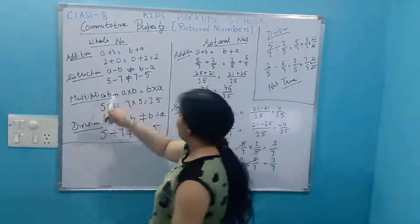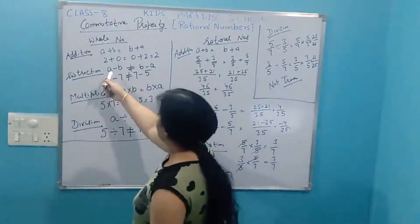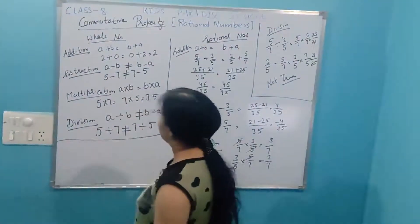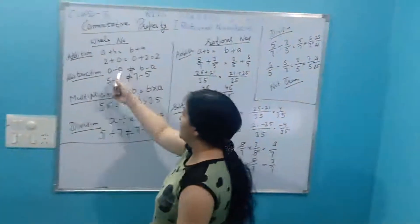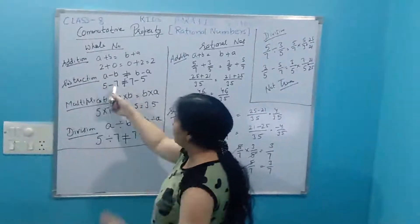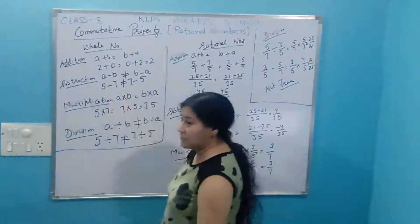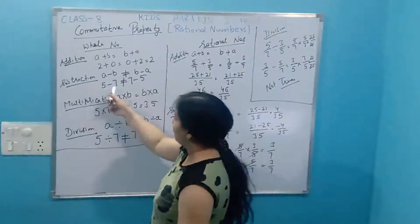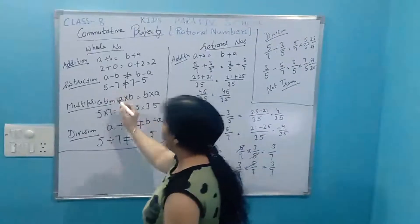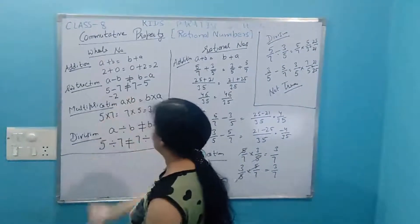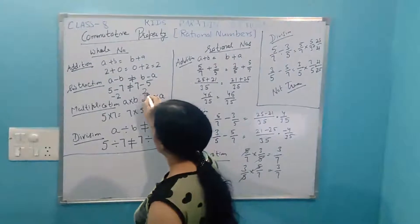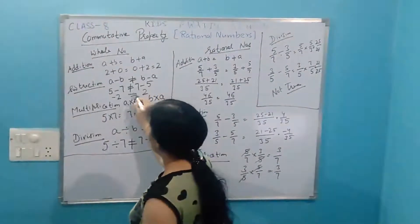Second, subtraction. Subtraction means a minus b. Suppose there are two numbers a and b. Let a be 5 and b be 7 and we subtract them. Five minus seven is minus two, while seven minus five is two. They are not equal.